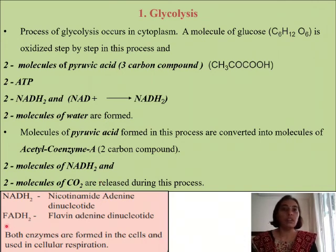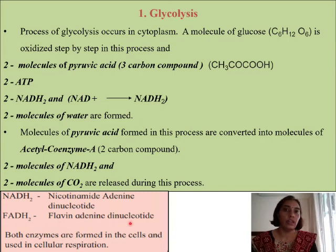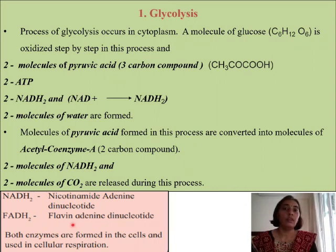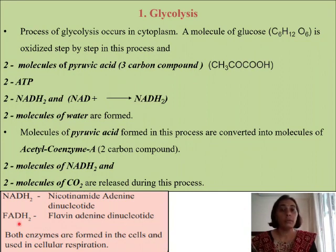Apart from that, we will also come across FADH2 in the next slide. FADH2 is flavin adenine dinucleotide — that is again a coenzyme present in the cells that helps in the process of cellular respiration. We will be learning more about NADH2 and FADH2 when we study vitamins, and there we will know more about them.